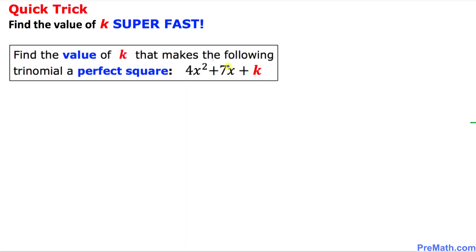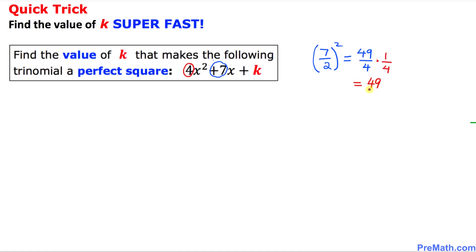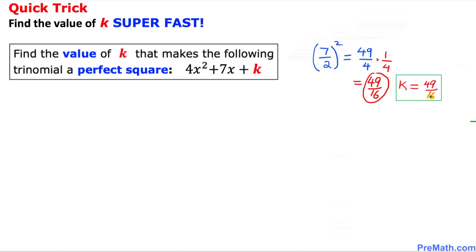Here is our next example. In this trinomial, our middle number is 7, the coefficient of x. Always divide it by 2 and then square it, giving us 49 over 4. Now focus on the leading coefficient, which is 4. We divide 49 over 4 by 4, which is the same as multiplying by 1 over 4, giving us 49 over 16. That is our k value, so k turns out to be 49 over 16.